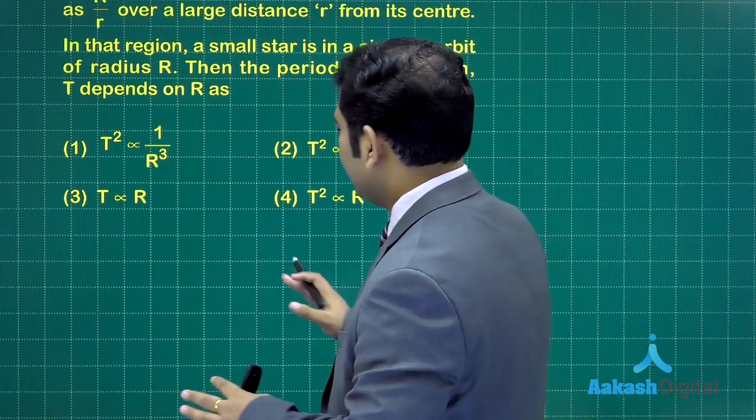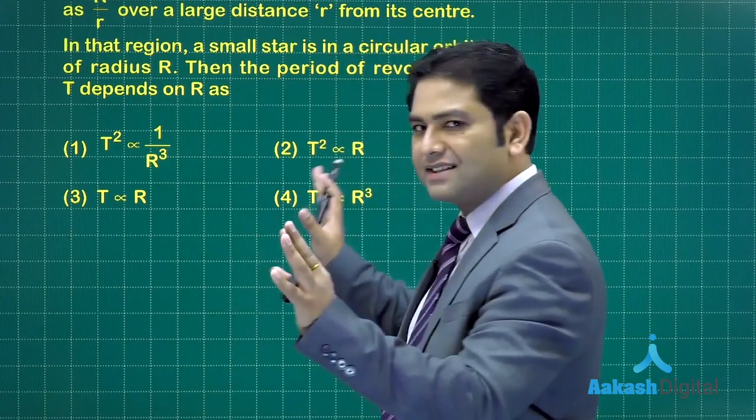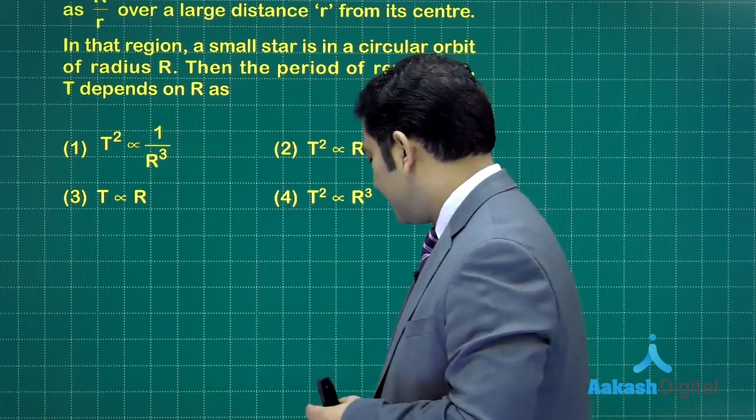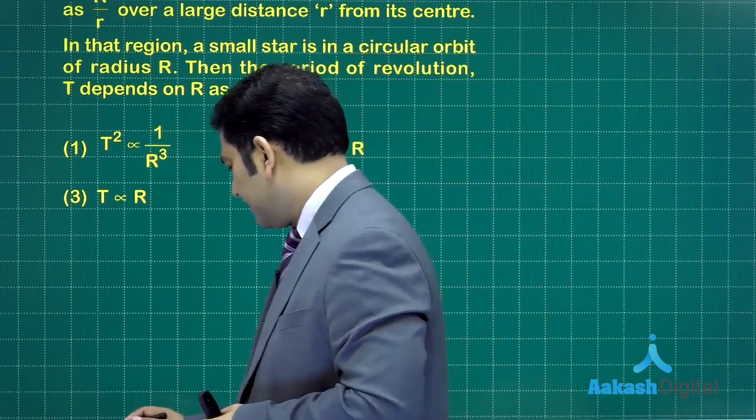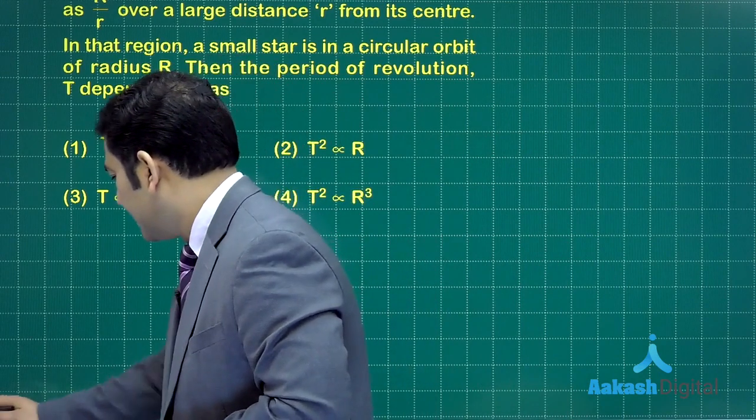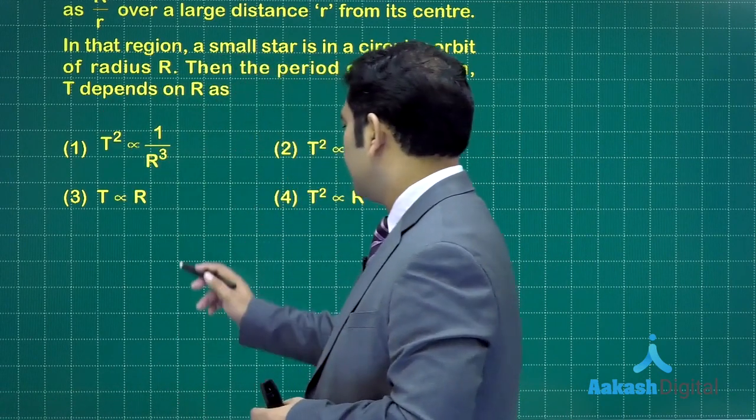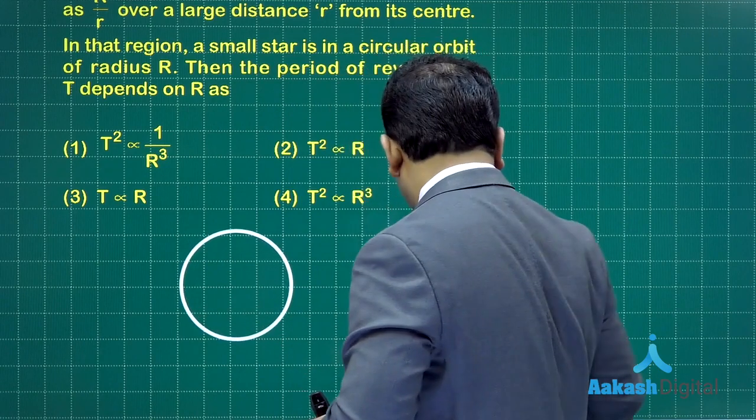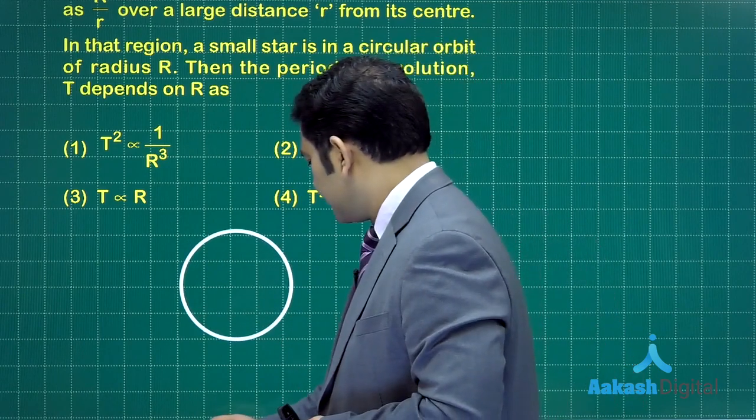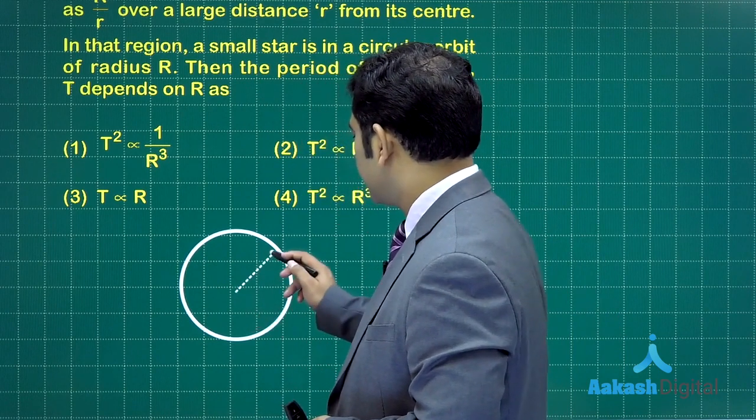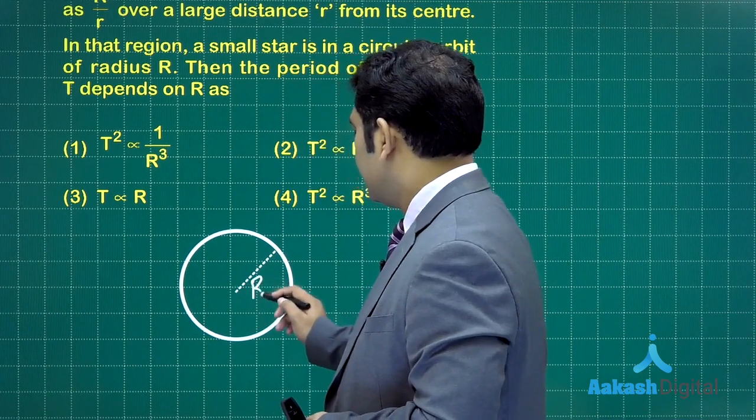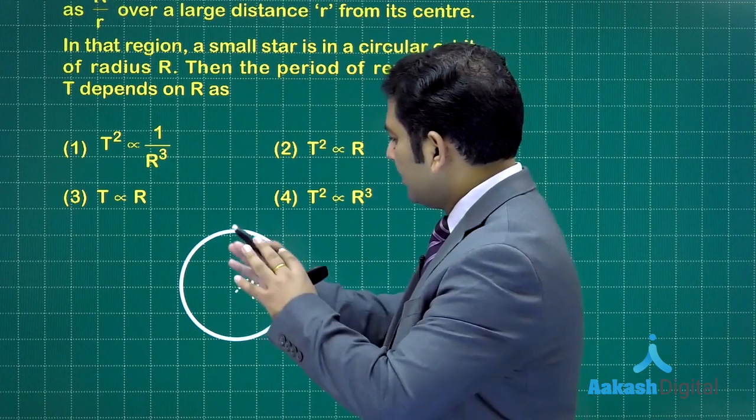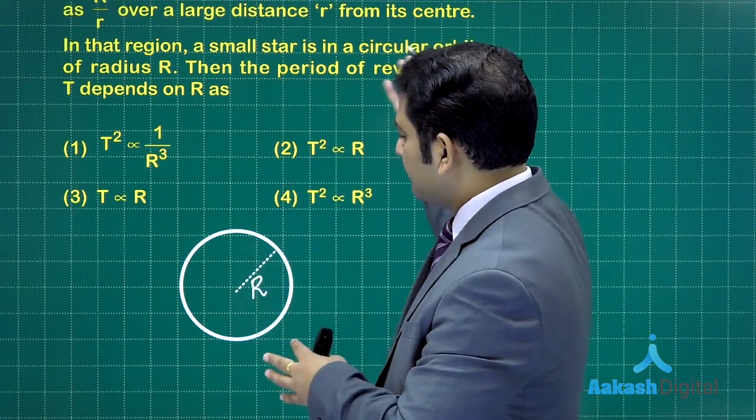If we try to see, let me assume that the galaxy is quite large filling the entire space. Then let's say the circular orbit of that small star, somewhere here that is the circular orbit. Remember this is the orbit.